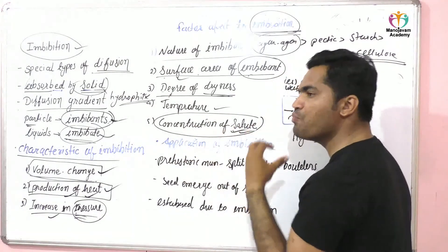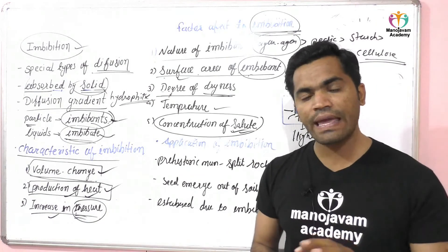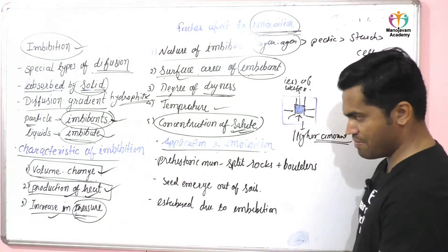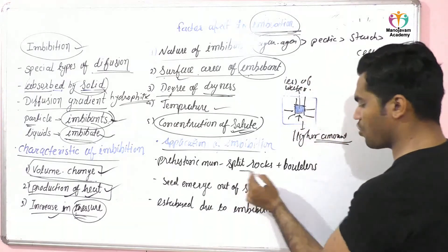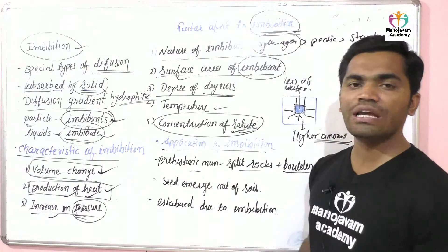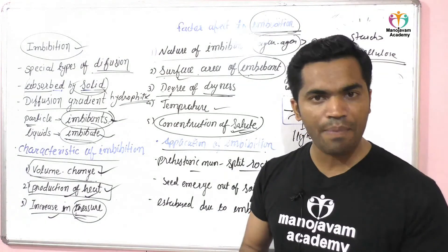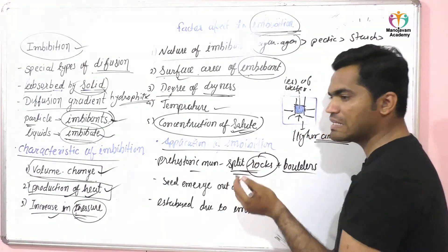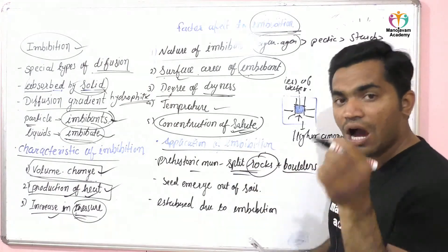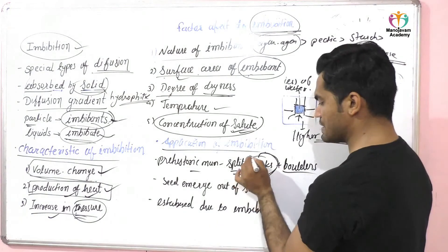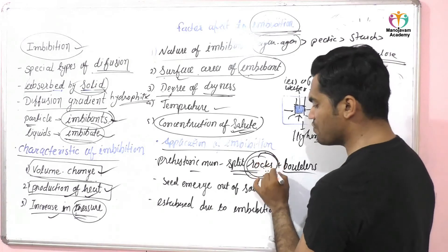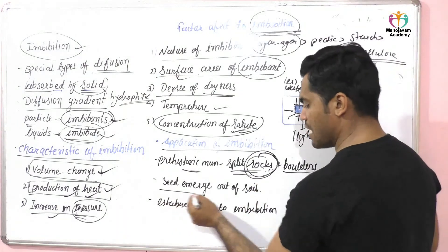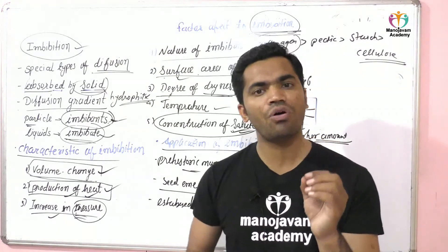Now, what is the importance of imbibition in plants and in normal life? The first application is splitting of rocks. Prehistoric men who studied rocks wanted to split them without causing damage to the surface. To split a rock, they used the process of imbibition — by inserting a hydrophilic material into a crack, water absorption caused expansion and split the rock.